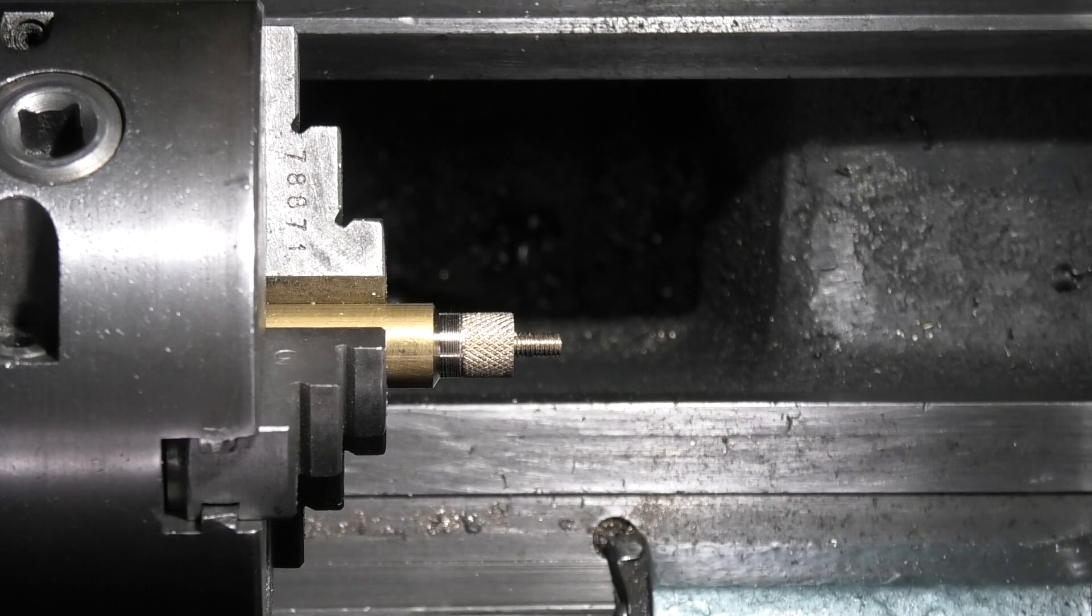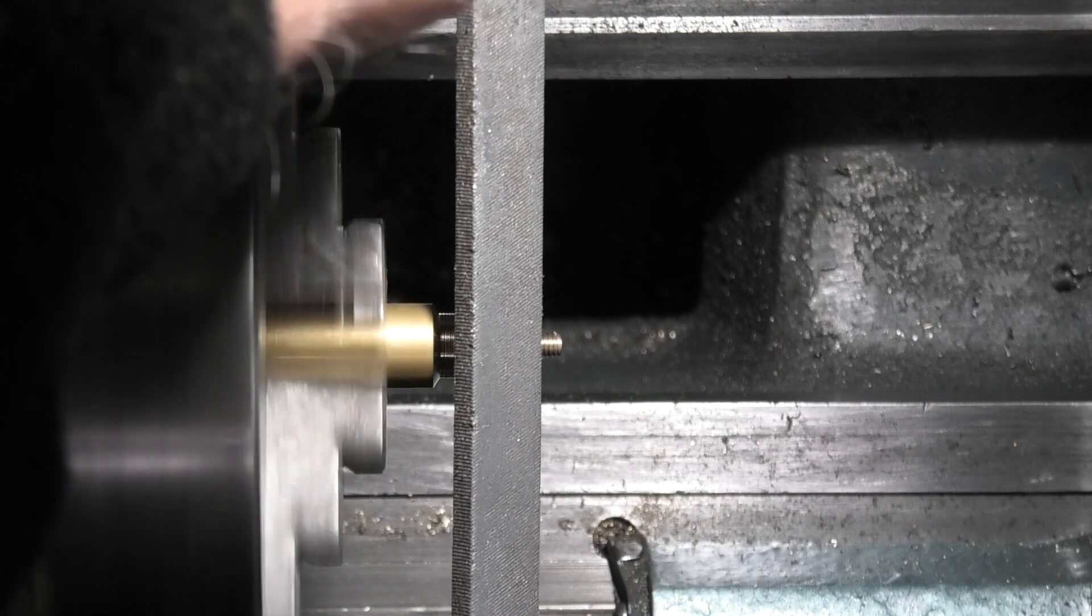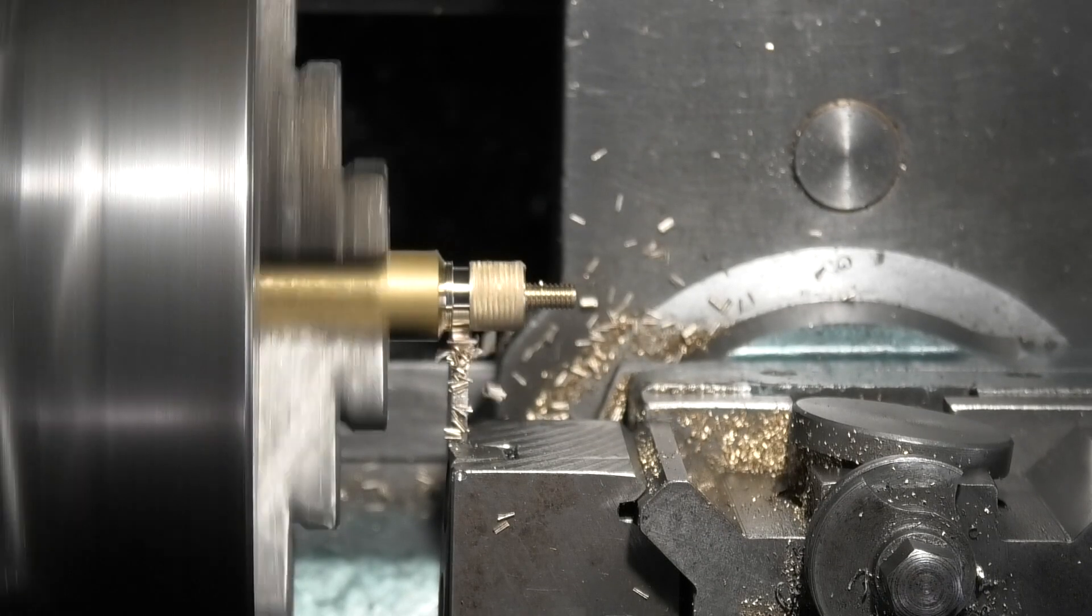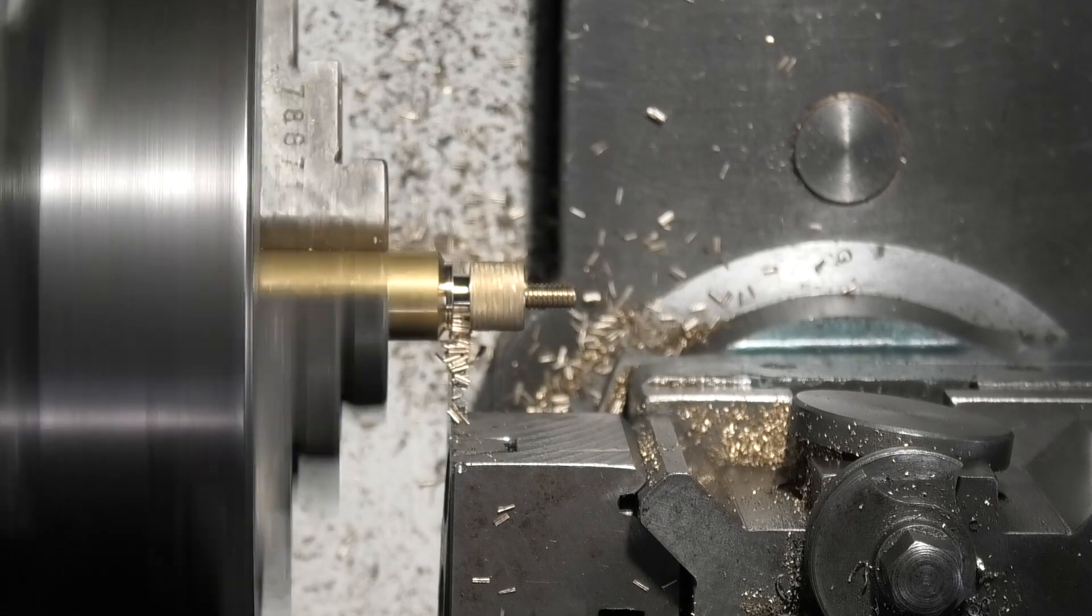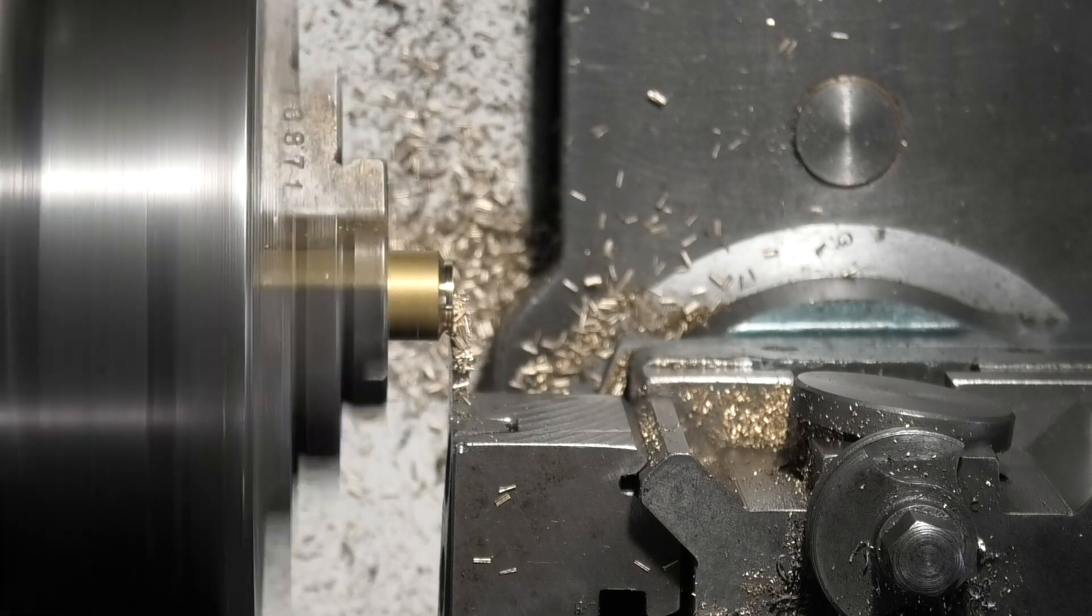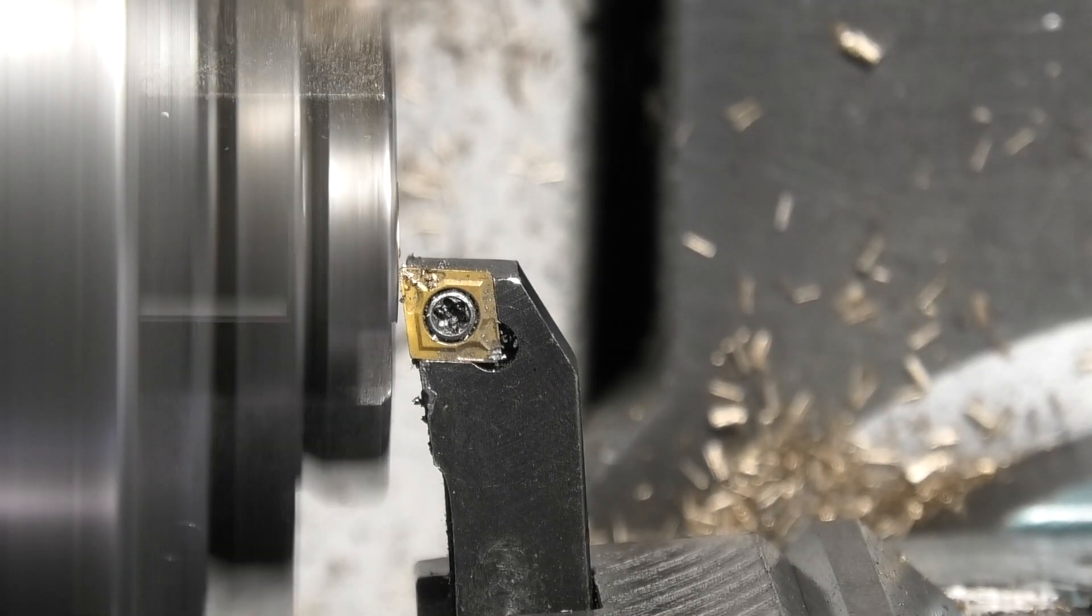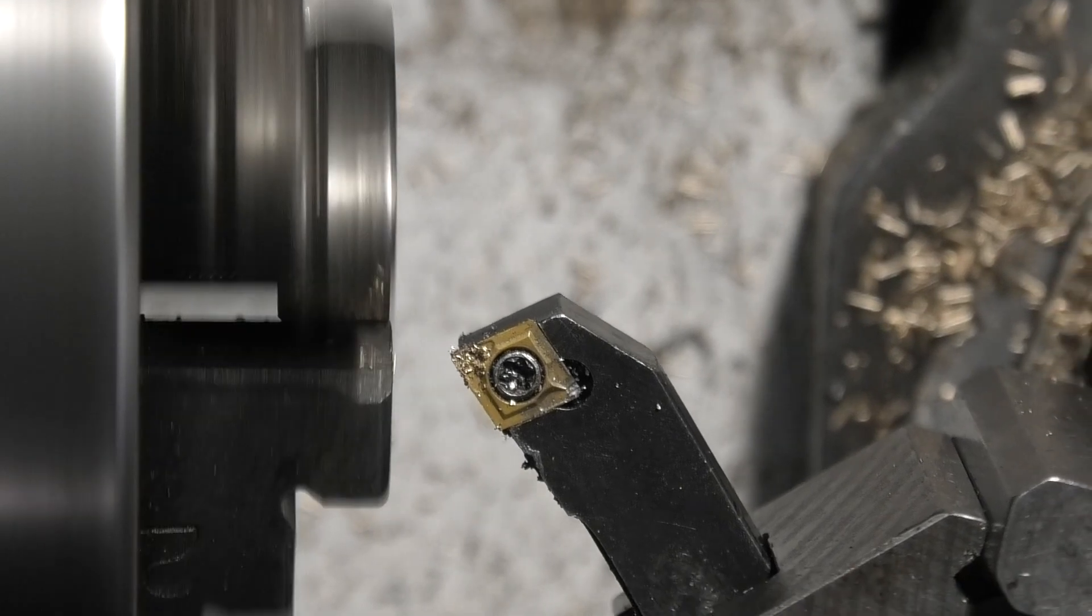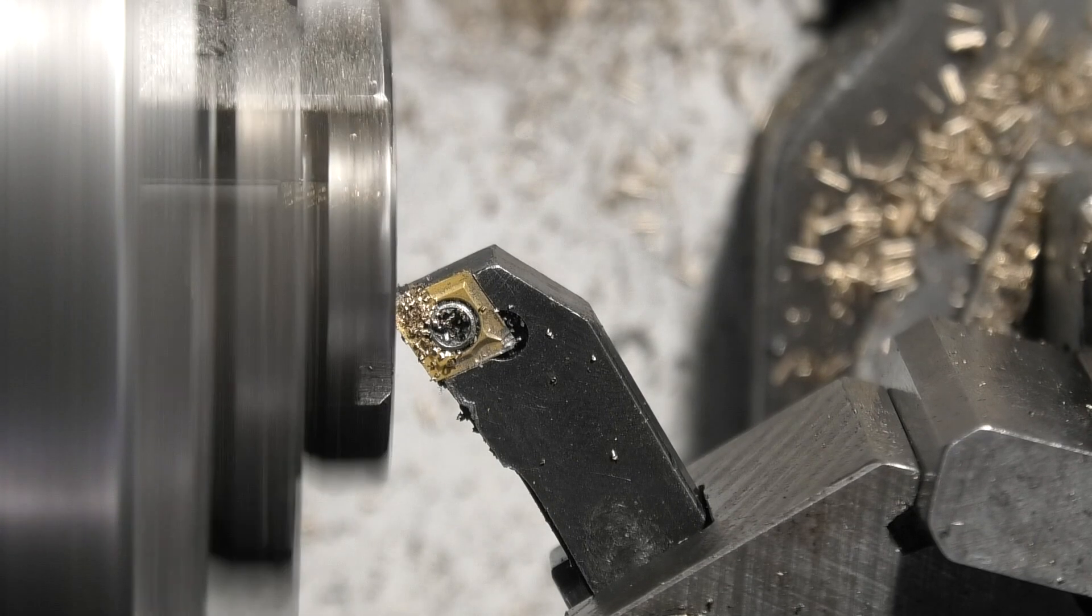While it's there I'll just take this edge off here because it'll be quite sharp. And now I'll face the peep off to get the face flat. I've changed the angle of the tool so I can put a small recess on the face just to make it look nice.